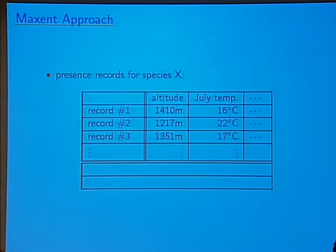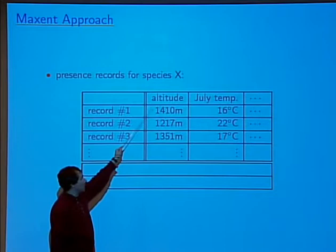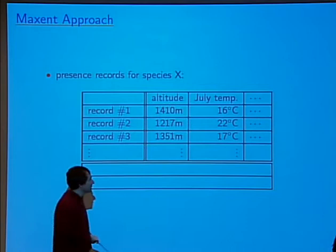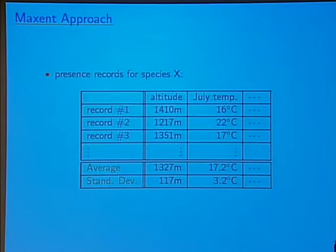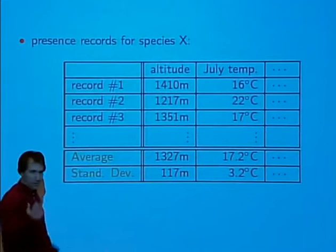We actually have environmental variables for every point on the map, and in particular for all places where the species was observed. For the first observed location, the altitude is about 1,410 meters, and the July temperature on average is about 16 degrees centigrade, and so on. If you look at data like this, the first thing you want to do is take the average of these numbers — a natural thing to do.